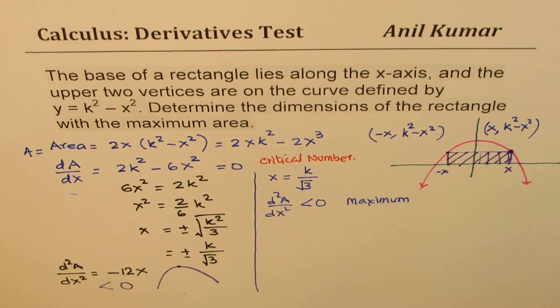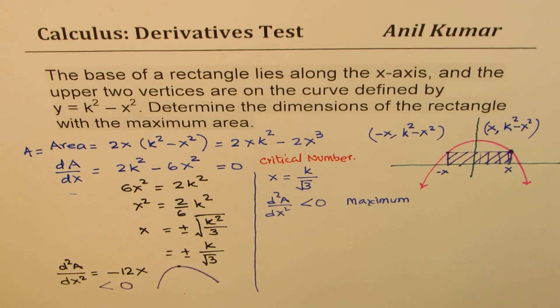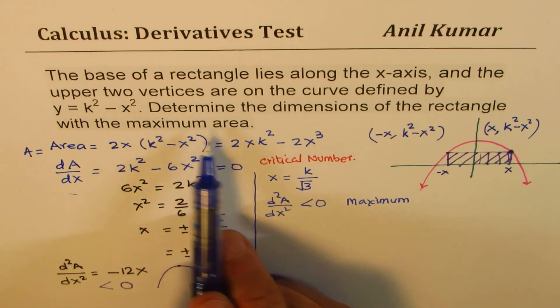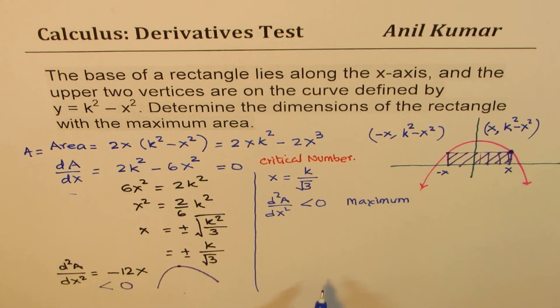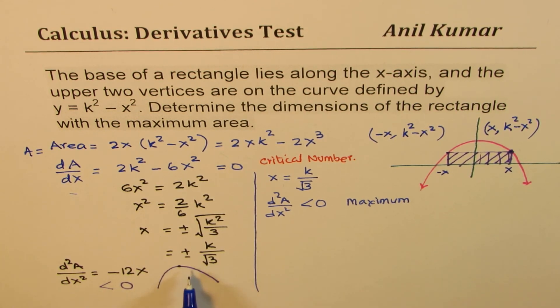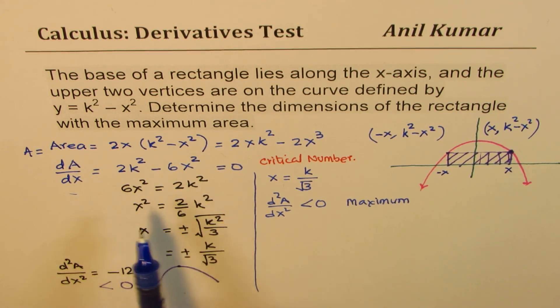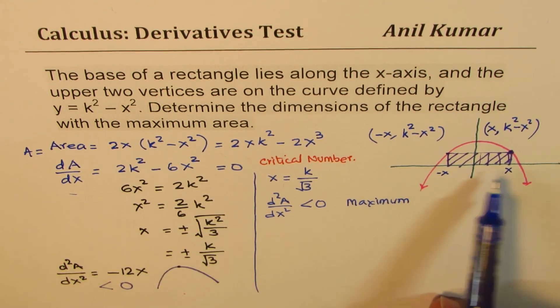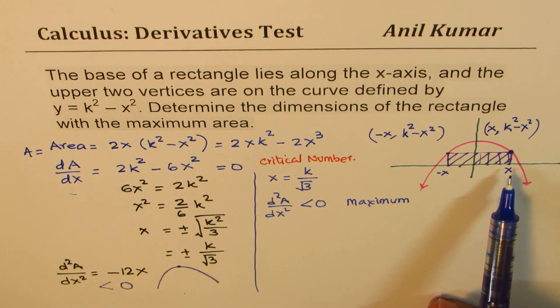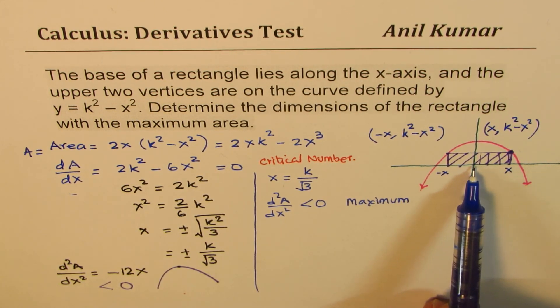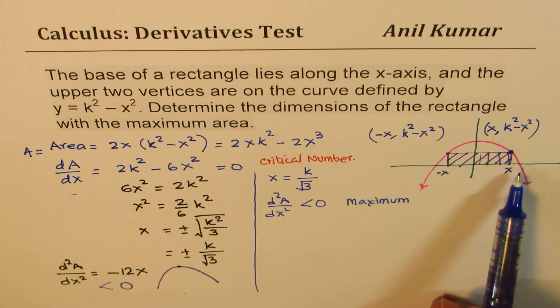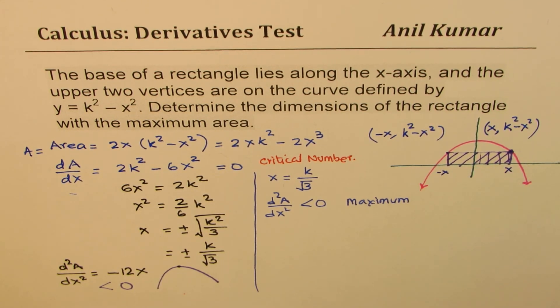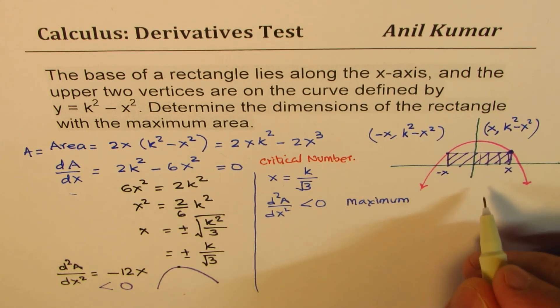The other way which we can ensure that this is maximum is to analyze the first derivative, take a point on the left side and right side, and then do it. And the third way is to take the extreme values. Now, extreme value of x could be what? Let me also discuss this part.